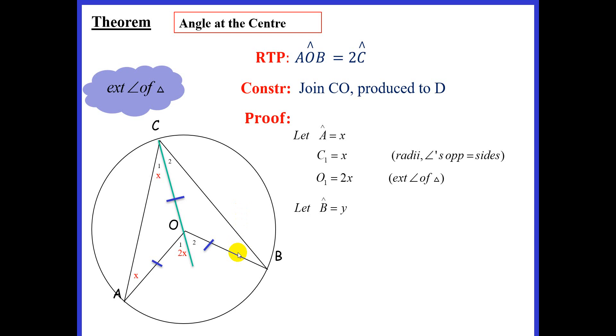Now, we're going to go on the other side, and we're going to call B Y. We're going to use the same technique. If angle B is Y, we can conclude that C2 is Y. And we have a reason, radii, angles opposite equal sides.